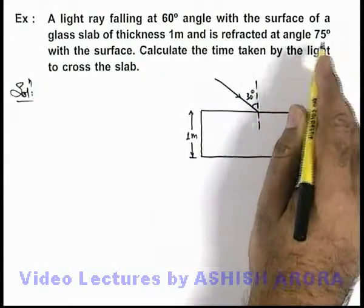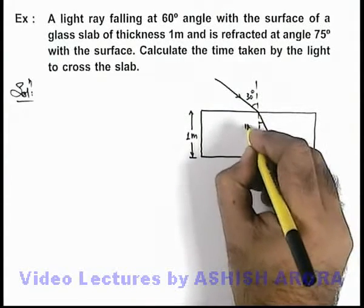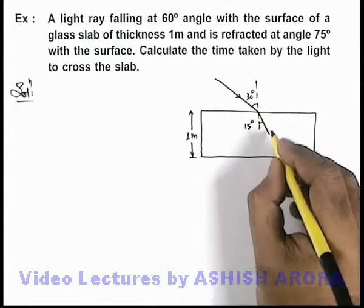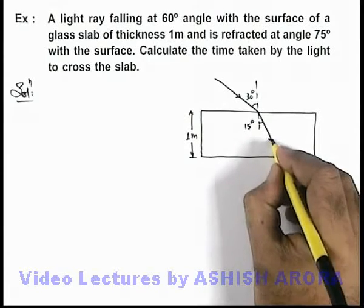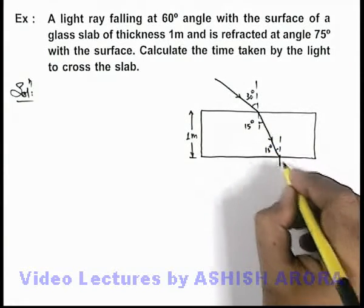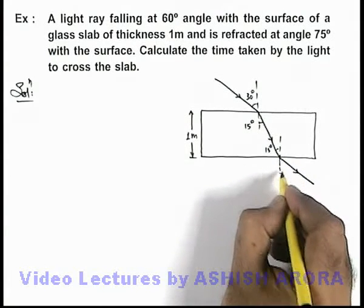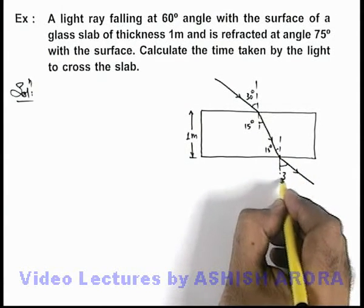It is refracted at an angle 75 degree with the surface, that means it is refracted at an angle of refraction 15 degree. Finally, the light will incident on the other surface at the same angle 15 degree and it will emerge in the same direction of incident ray at an angle of emergence 30 degree.